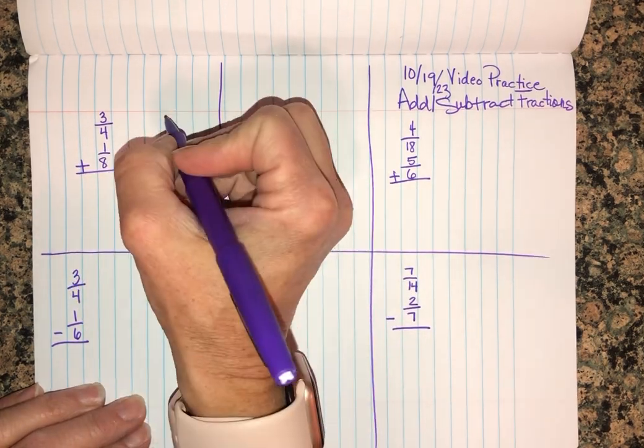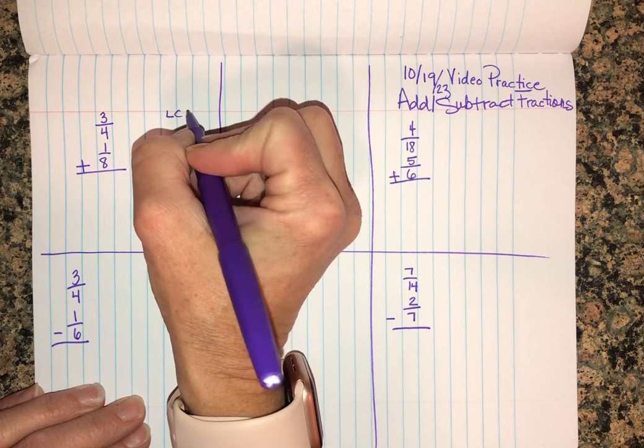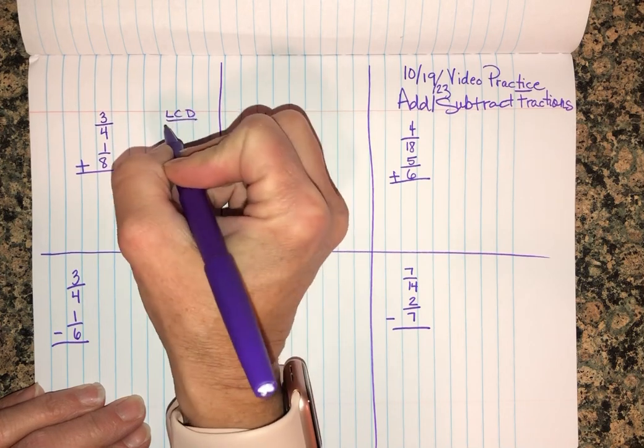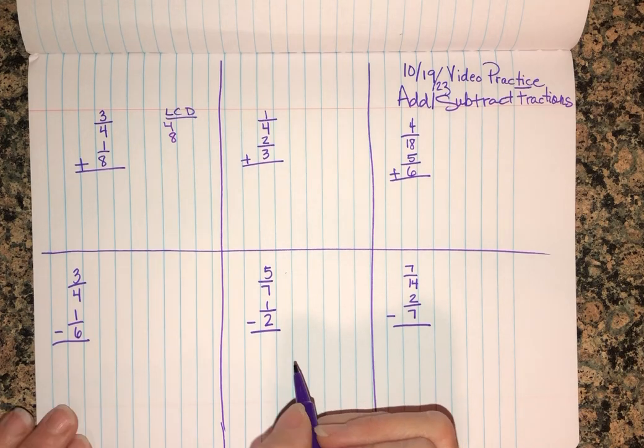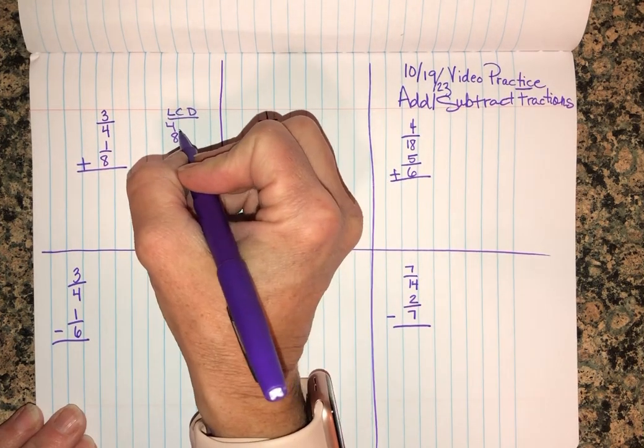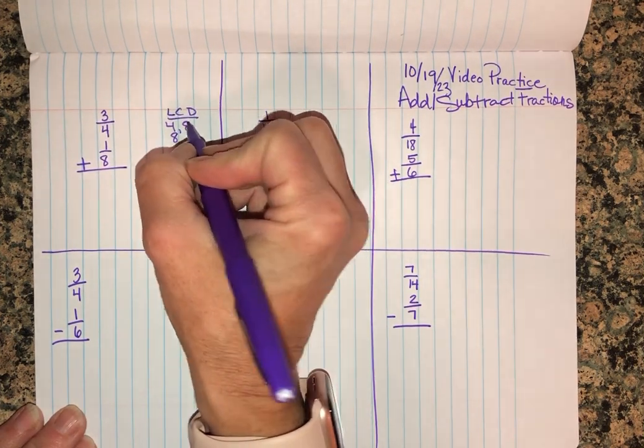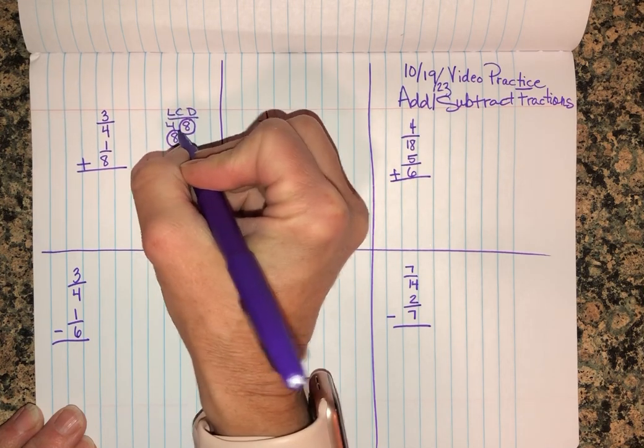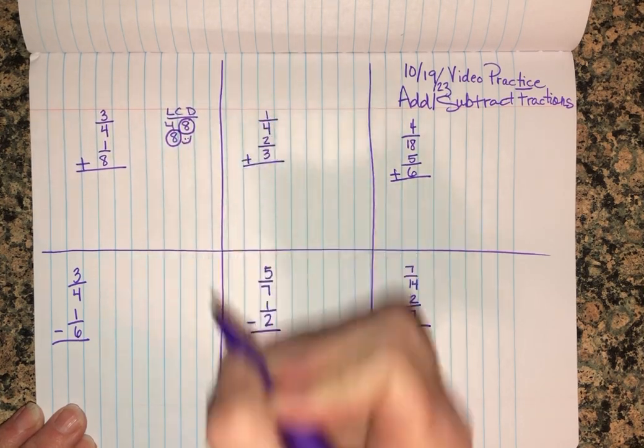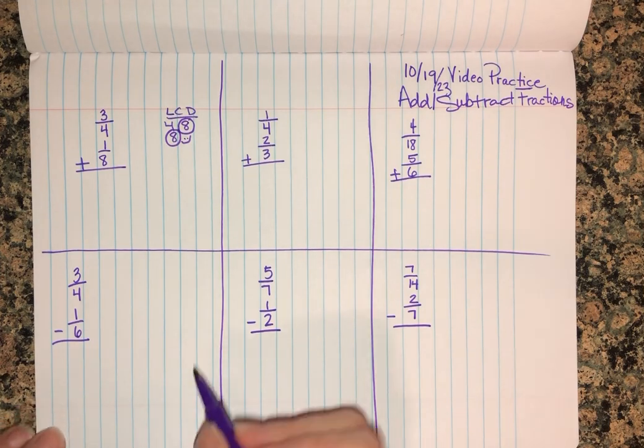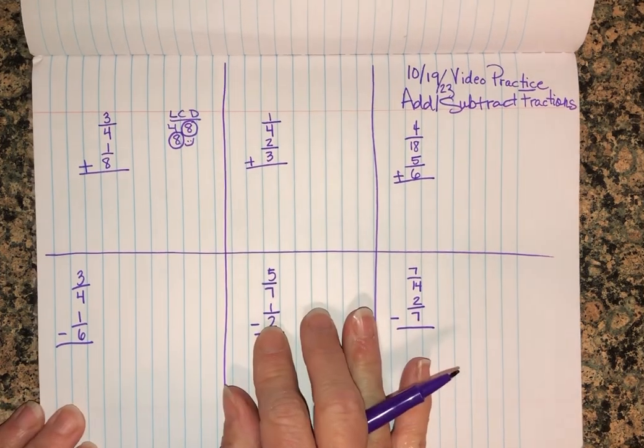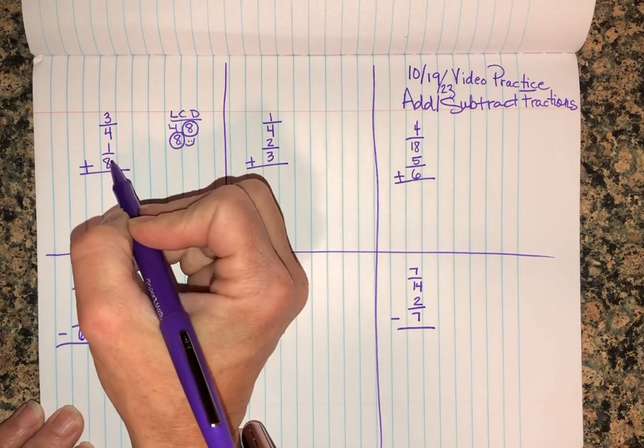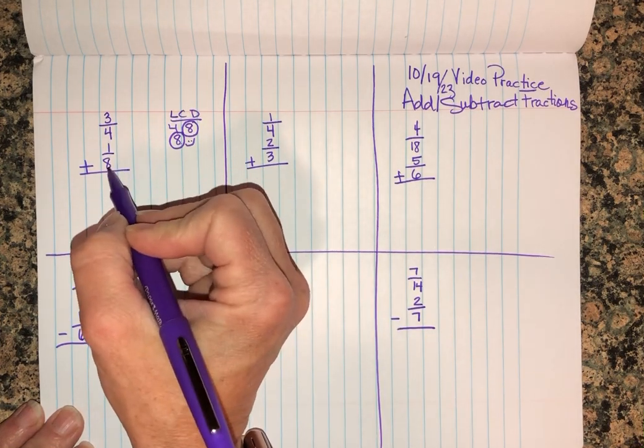So on this one here, three-fourths and one-eighth, we're gonna look for LCD of four and eight. First looking at multiples of four: four, eight - ding ding ding, I can stop here because these two guys are the same. I have a least common denominator of eight.